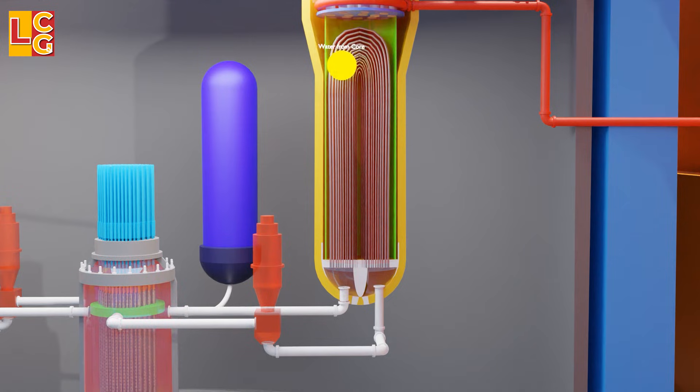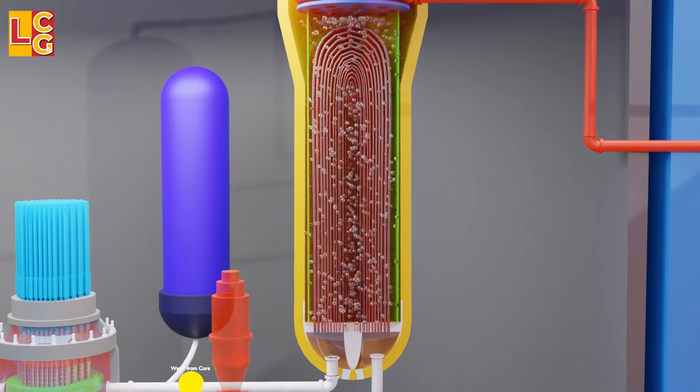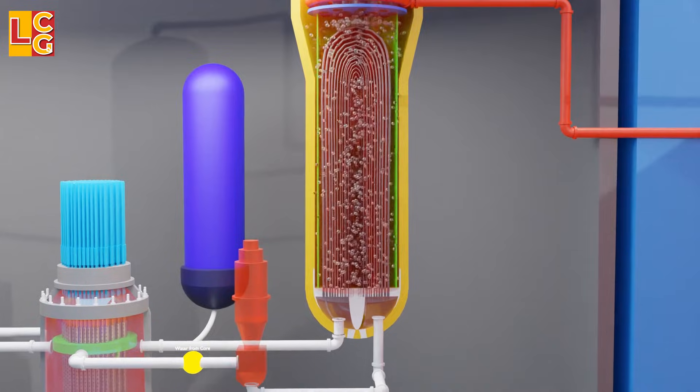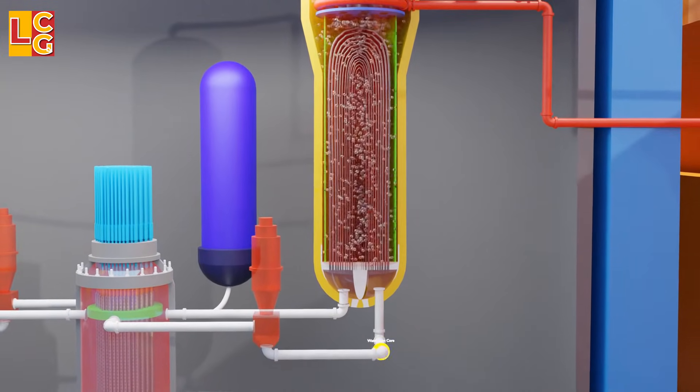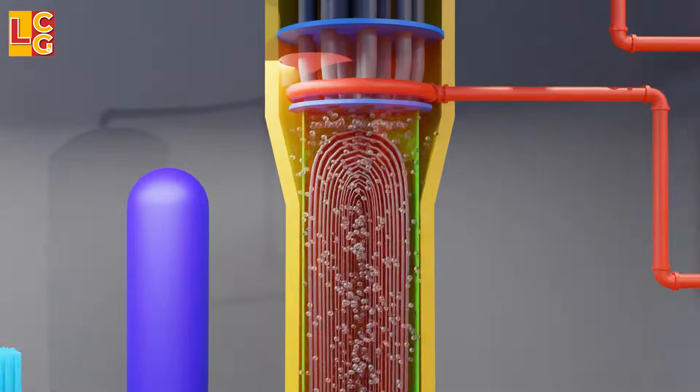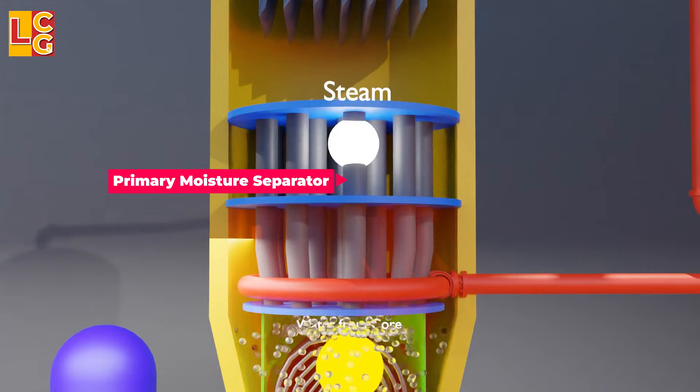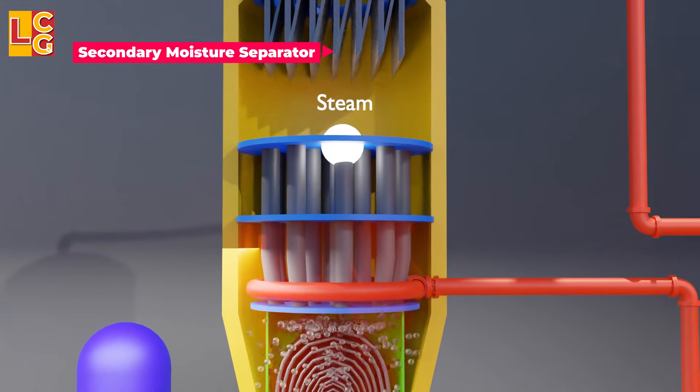In the meantime, as the water inside the steam generator continuously cools the incoming water from the reactor vessel, it reaches a boiling temperature, therefore producing steam. This steam then flows through these primary and secondary moisture separator tubes, which separate tiny water droplets from the steam.